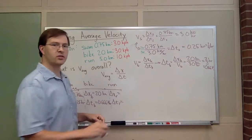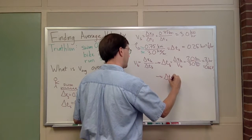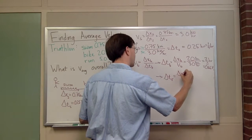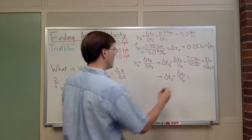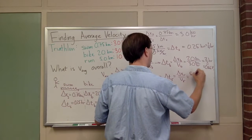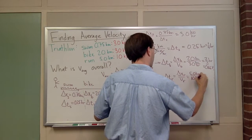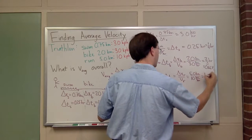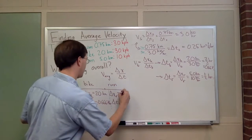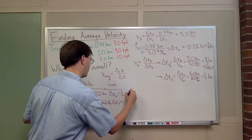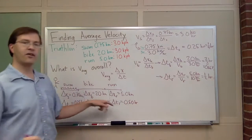Finally, for the run I can do the same thing. Since I did this symbolically, I can just rewrite delta t run is going to look like delta x run over v run. I know it's going to be the same shape of the equation. My run is 5.0 kilometers divided by my v of 10 kilometers per hour, and that comes out to half an hour. Exactly half an hour for these numbers. My delta x was 5.0 kilometers, and my delta t was 0.5 hours.